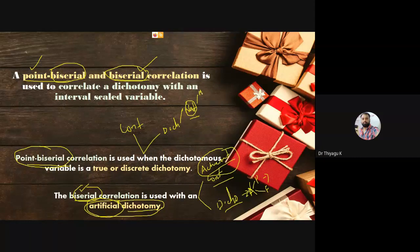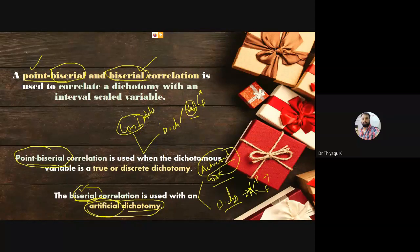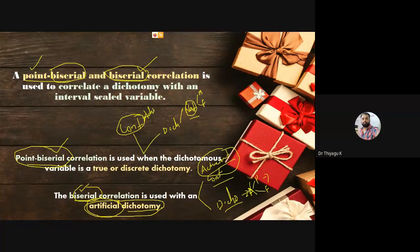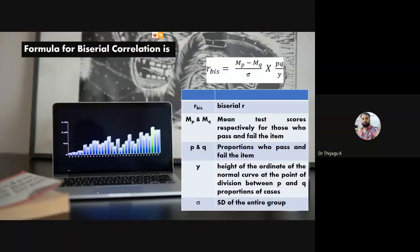For point biserial, one variable should be continuous and the other should be a natural dichotomous like male/female. If the dichotomous variable is artificial — like pass and fail — then we adopt biserial, not point biserial. The formula for biserial is rbis, where rbis is the short form for biserial correlation.